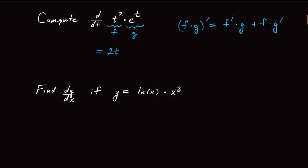Then I multiply that by g, which is e to the t. Then I add to that f — the first function, t squared — and then I take the derivative of g, where g is e to the t. The derivative of e to the t is just itself, e to the t. That's the product rule — it tells us exactly what the derivative is if we know the formula for the functions.